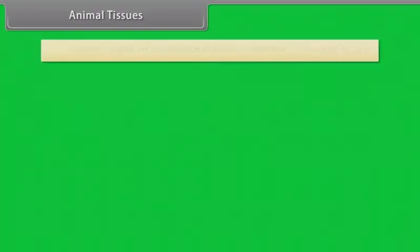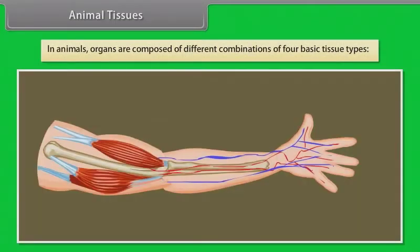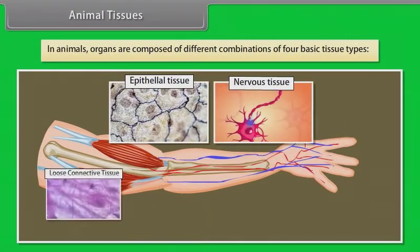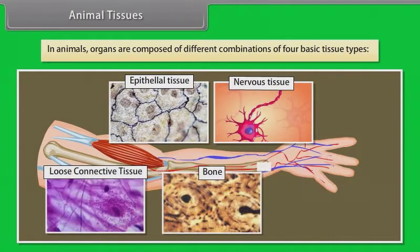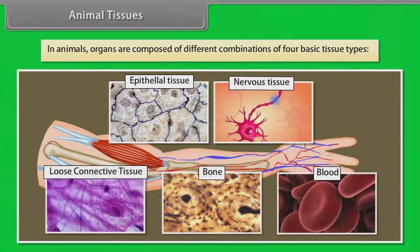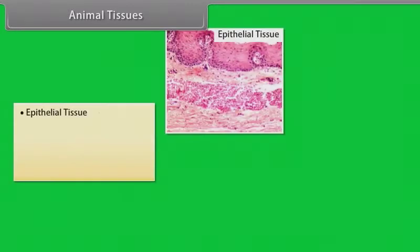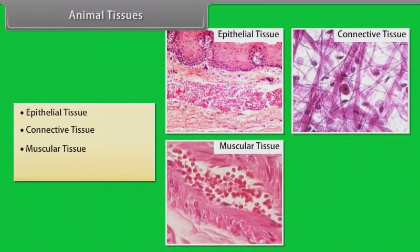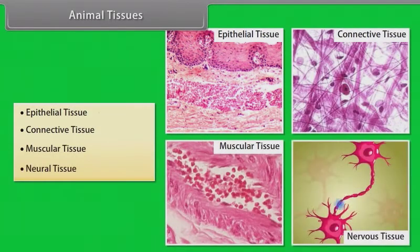Animal tissues. In animals, organs are composed of different combinations of four basic tissue types. They are: epithelial tissue, connective tissue, muscular tissue, and neural tissue. Let's know about them in detail.